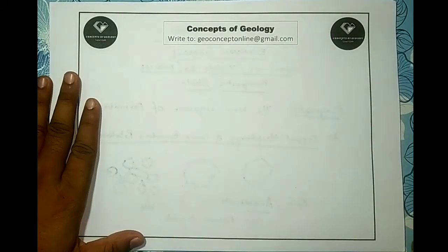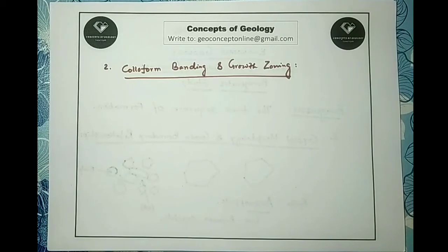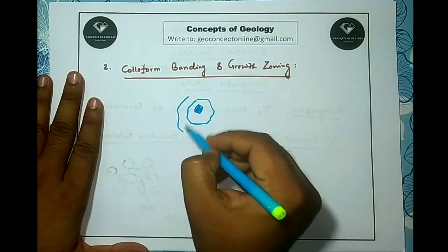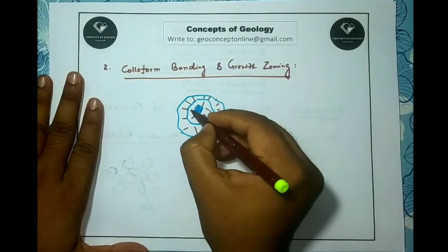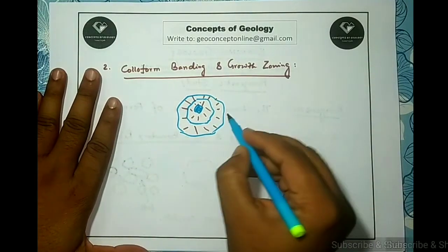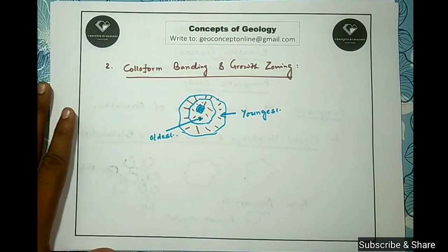The second procedure is colloform banding and growth zoning. Colloform bandings are concentric botryoidal overgrowths of fine radiating crystals around an early-formed nucleus. This texture is very common in open-space filling, especially in iron and manganese oxides. The nucleus may be a fragment of wall rock or an earlier-formed ore grain. The composition of the outermost band is the last formed, since growth is radiating outward — so the outermost band is youngest and the nucleus is oldest.